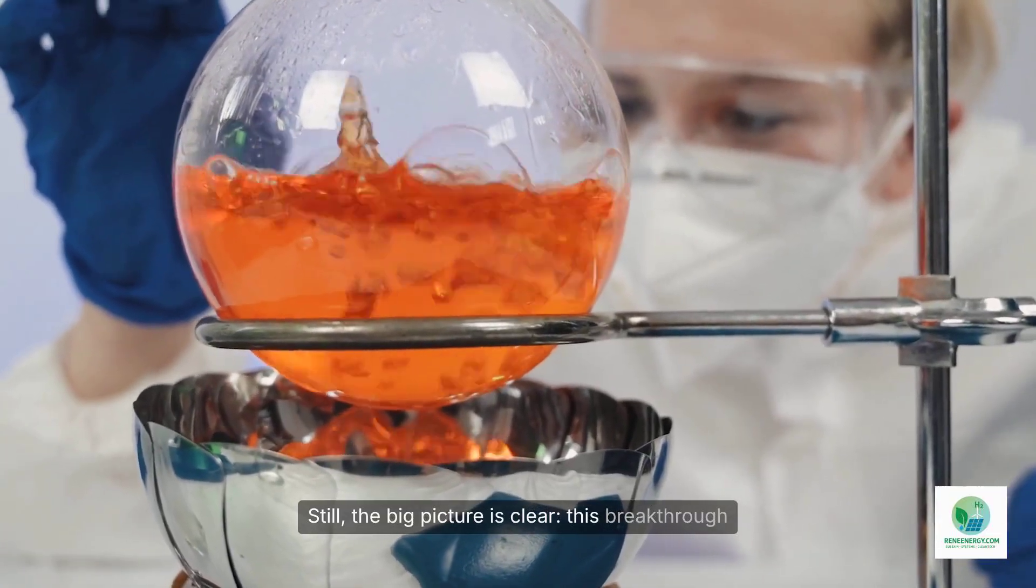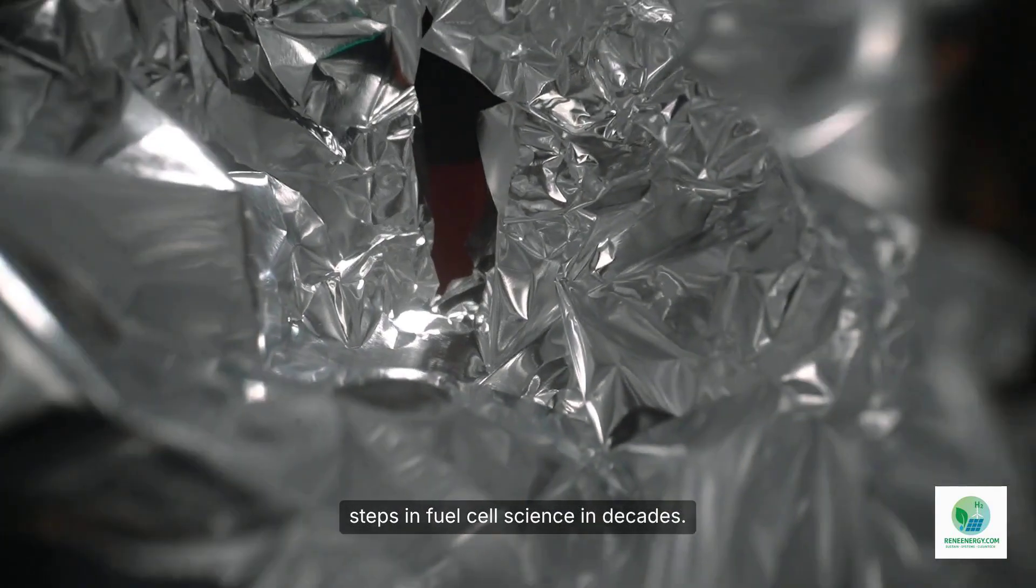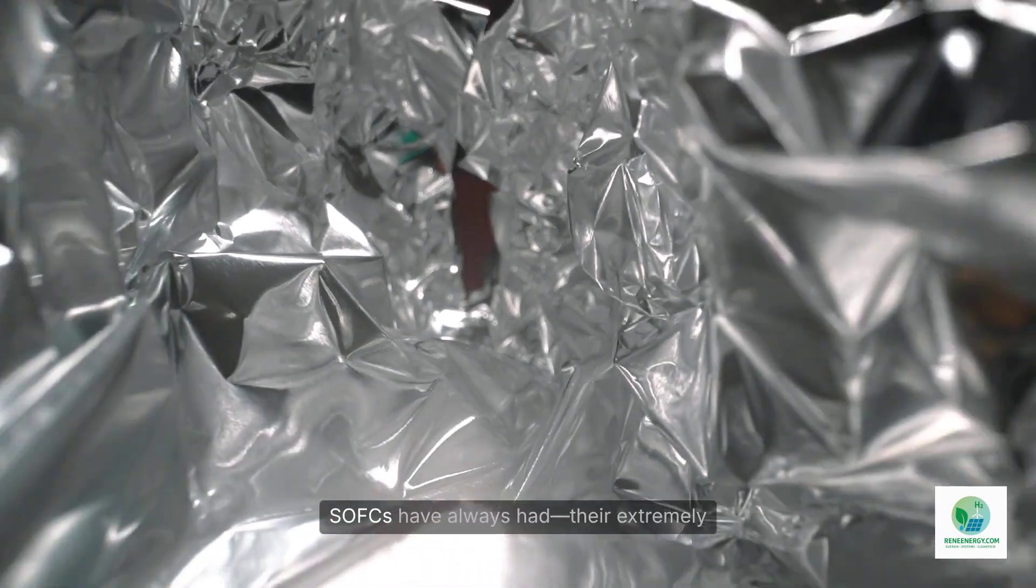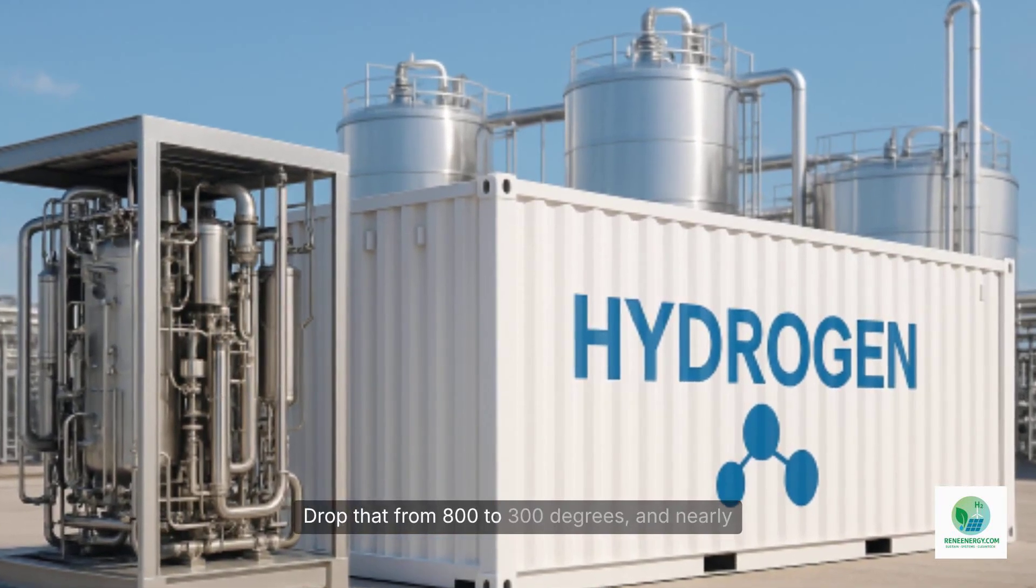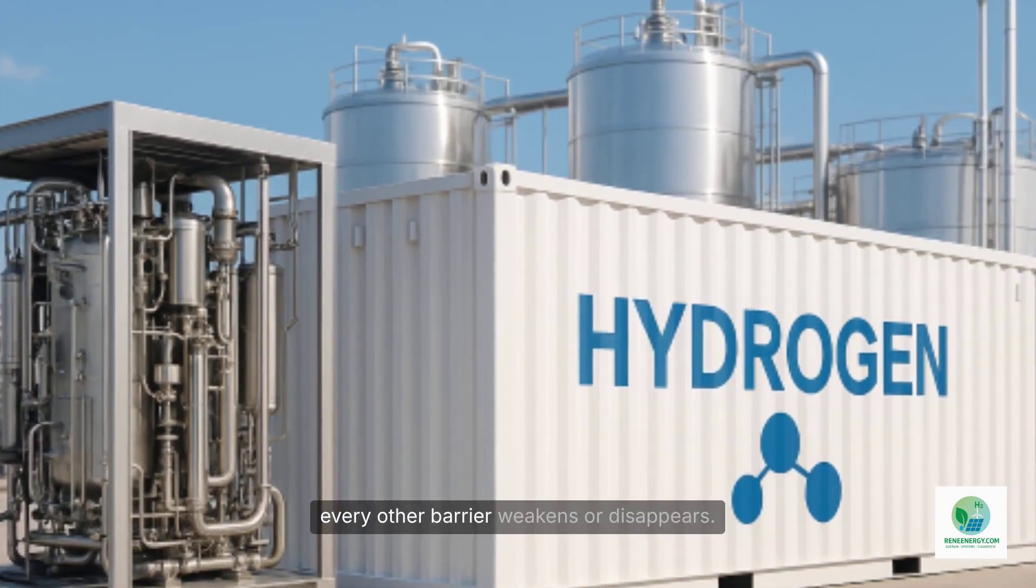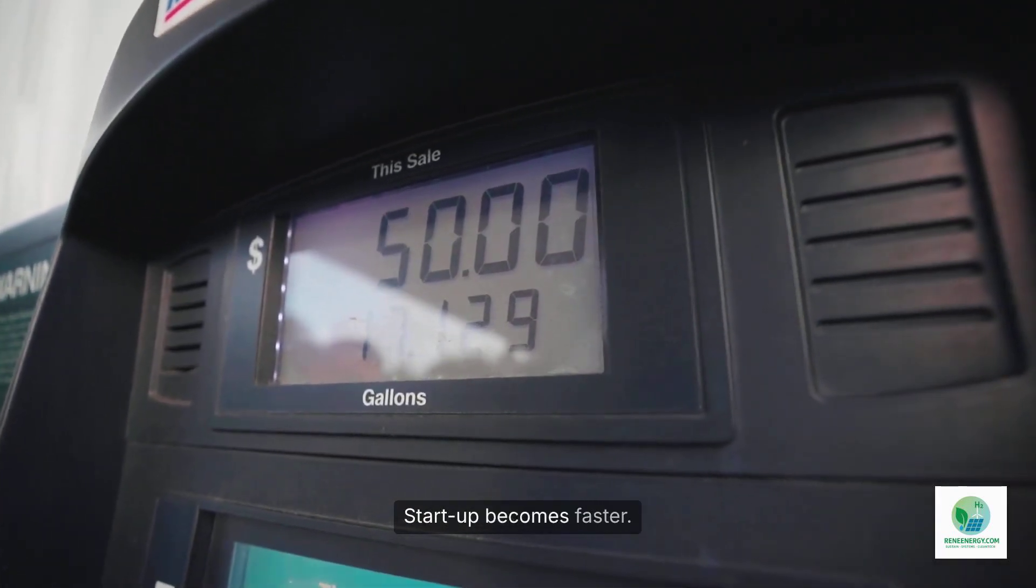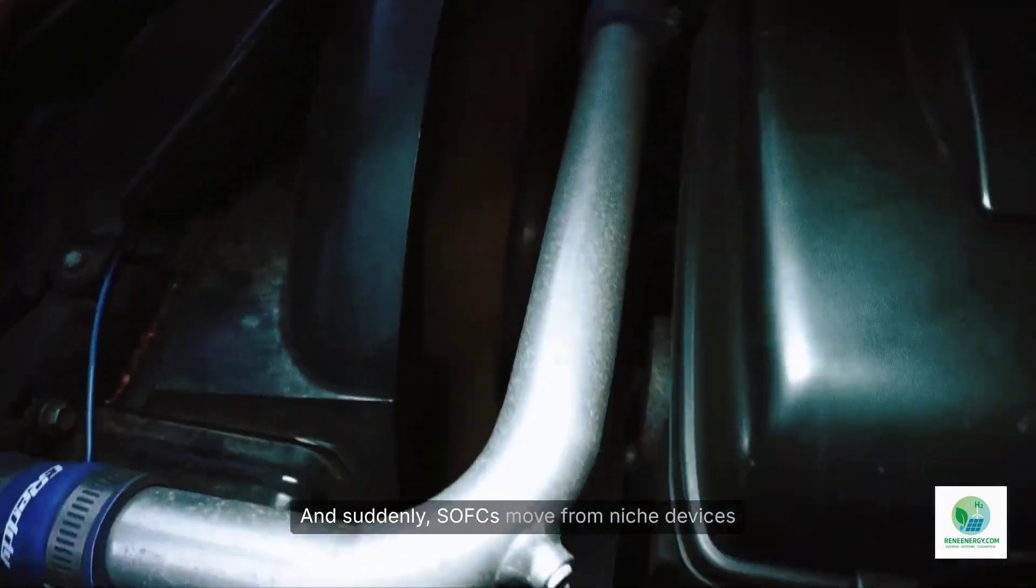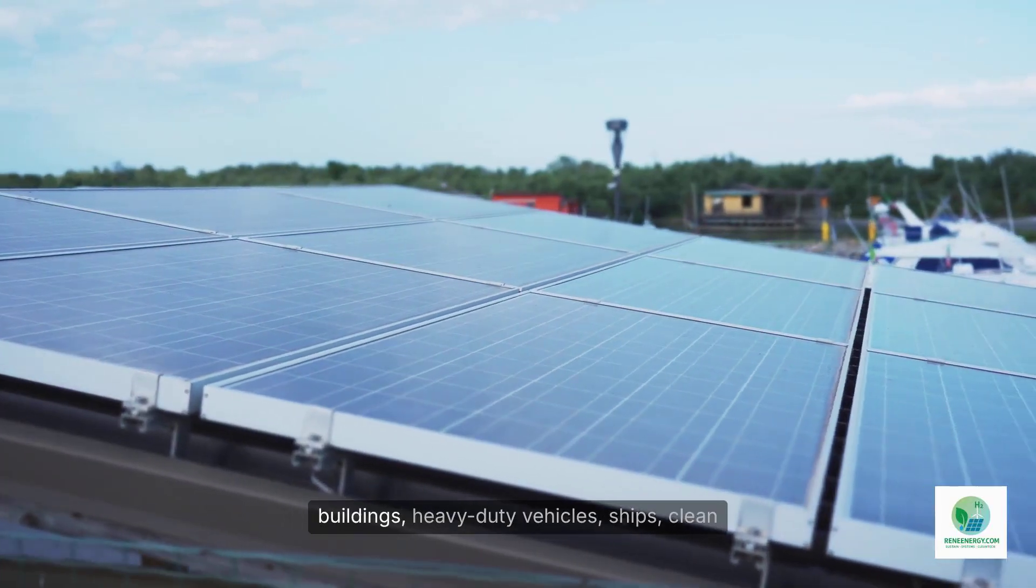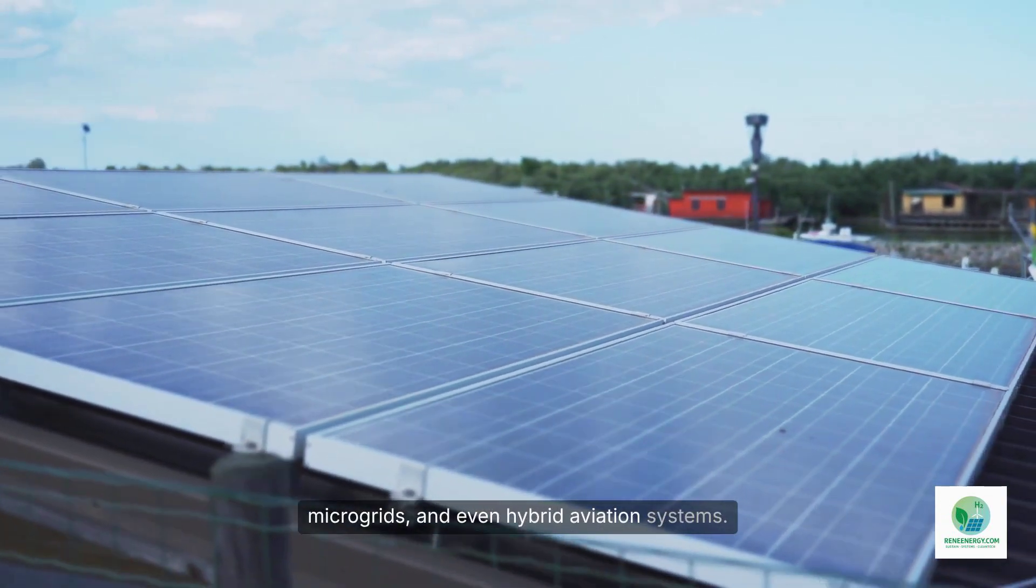Still, the big picture is clear. This breakthrough represents one of the most important steps in fuel cell science in decades. It attacks the single biggest problem SOFCs have always had: their extremely high operating temperature. Drop that from 800 to 300 degrees, and nearly every other barrier weakens or disappears. Costs come down. Durability goes up. Startup becomes faster. Integration becomes easier. And suddenly, SOFCs move from niche devices to versatile energy systems that can fit into buildings, heavy-duty vehicles, ships, clean microgrids, and even hybrid aviation systems.